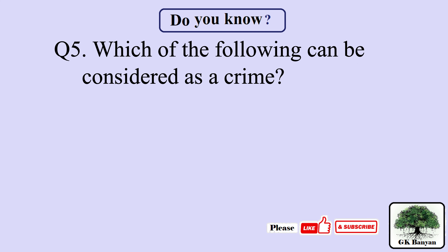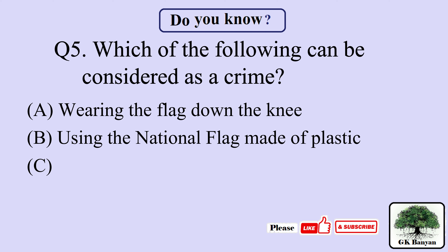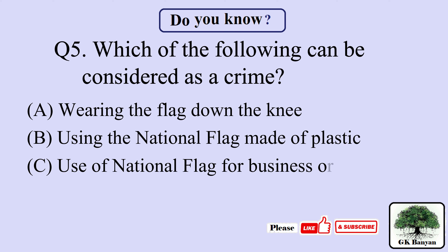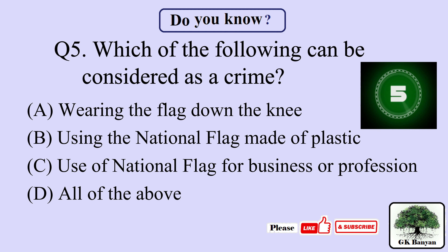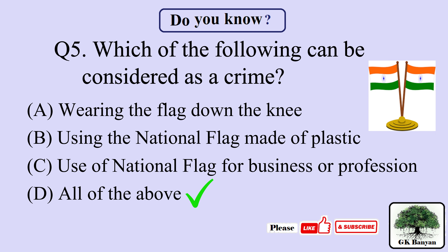Question 5. Which of the following can be considered as a crime? Your options are A. Wearing the flag down the knee, B. Using a national flag made of plastic, C. Use of the national flag for business or profession, D. All of the above. The right answer is D. All of the above.